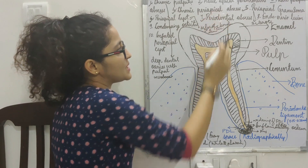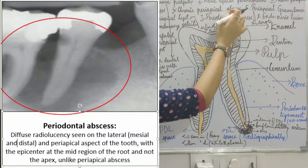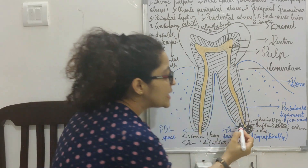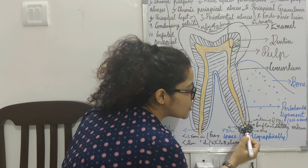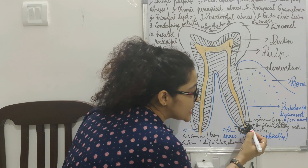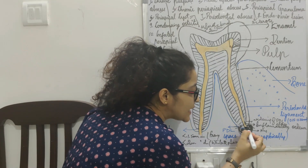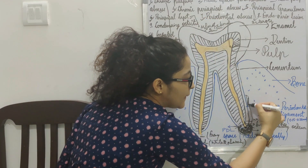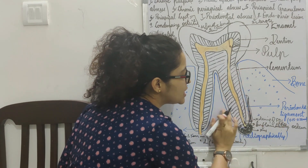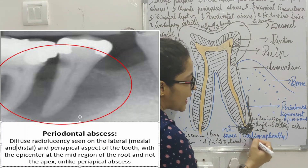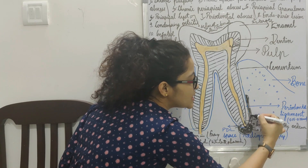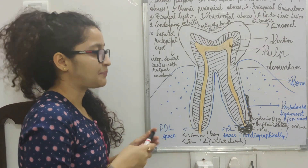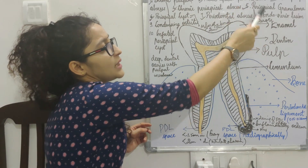Coming to periodontal abscess — the main difference between periodontal abscess and periapical abscess is the epicenter. In all periapical lesions, the center point will be the apex of the tooth. Whereas in periodontal abscess, you will see a diffuse radiolucency on the lateral aspect of the root, suggestive of periodontal abscess.